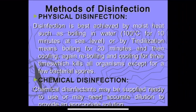Methods of disinfection include physical and chemical disinfection. For physical disinfection, we use moist heat — for example, boiling in water at 100 degrees Celsius for 10 minutes at sea level. Tyndallization means boiling for 20 minutes, cooling, and reboiling for three cycles, which kills all microorganisms except a few bacterial spores.